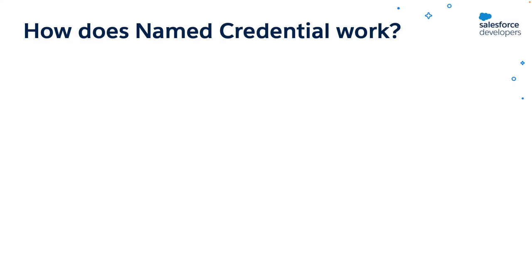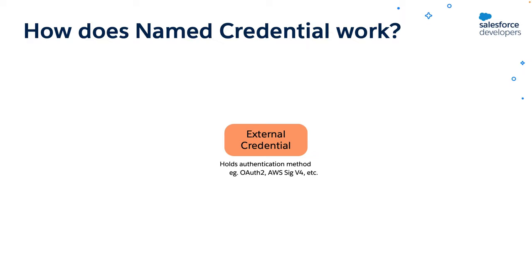Let's now check how the named credentials work. The first step is to define the external credential. It holds the authentication method — for example OAuth 2 — and related details such as auth provider and scope. You can map this external credential with one or more permission sets. The way we set up permissions in the external credential has changed since the basic REST callouts video. You can now either use profiles or permission sets. I'll show how to use it with profiles in this video, and it is similar for permission sets as well.